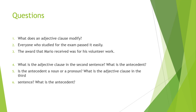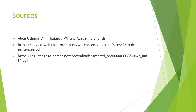Review questions: What does an adjective clause modify? 'Everyone who studied for an exam passed it easily.' 'The award that Mario received was for his volunteer work.' What is the adjective clause in the second sentence? What is the antecedent? Is the antecedent a noun or a pronoun? What is the adjective clause in the third sentence? What is the antecedent? You can also use available sources to prepare practical lessons.